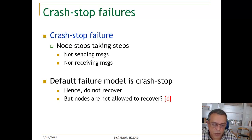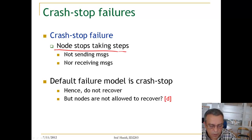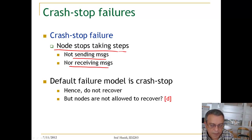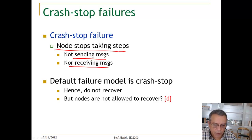Let us look at the crash stop failure model, which is the most common failure model assumed when implementing distributed algorithms. Basically, a node will stop taking steps — it will stop doing computation steps, it will stop sending messages, and it will stop receiving messages. This is the default crash stop model. Most algorithms we are going to discuss use the crash stop model, and therefore whenever a process fails by crashing it will not join the algorithm anymore.